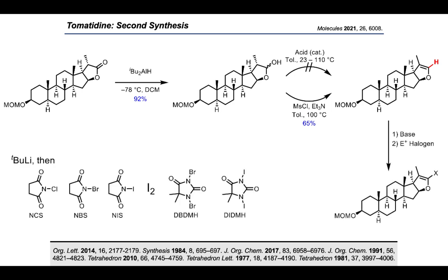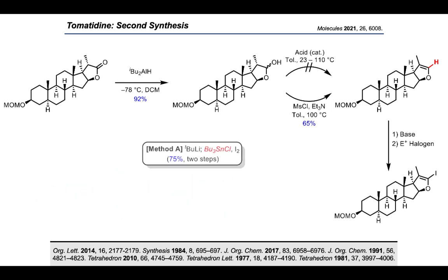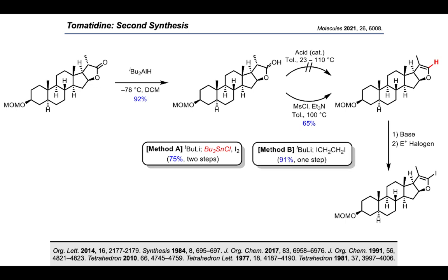We subjected the enol ether to the strong base t-BuLi and attempted to quench the deprotonated steroid with various electrophilic halogen sources, all of which failed to yield any halogenated product. However, treatment of the organolithium intermediate with tributyltin chloride cleanly yielded the stannyl enol ether, which afforded the iodo enol ether after reaction with molecular iodine in DCM. Although this provided a direct route to the iodo derivative, the tin intermediate is chemically inefficient and dangerous on large scale, and traces of toxic heavy metals would likely be carried to the final product used in in vivo and SAR studies. We circumvented this by reacting the deprotonated enol ether with 1,2-diiodoethane as the electrophilic iodine source, which cleanly afforded the desired iodo enol ether in 91 percent yield on a 2-gram scale.